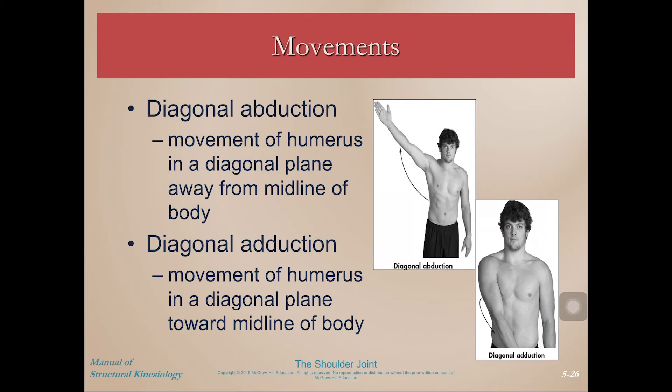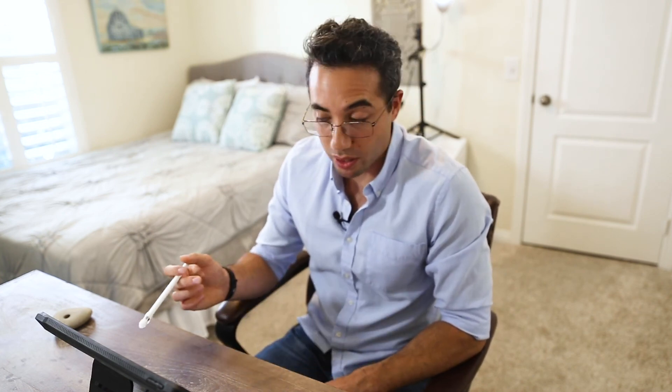We also have diagonal abduction — when abduction and adduction occur in an oblique plane of motion. There are many different oblique planes, essentially infinite, between true abduction and flexion, or between horizontal adduction/abduction and normal adduction/abduction. If it's in an oblique plane, we call it diagonal abduction and adduction. The key takeaway from this video is the concept of scapulohumeral rhythm — the idea that shoulder joint movement should be accompanied by shoulder girdle movement, with about one degree of scapular movement for every two degrees of shoulder joint movement.